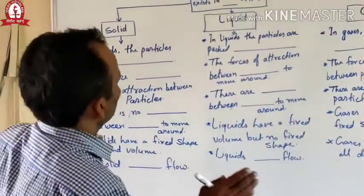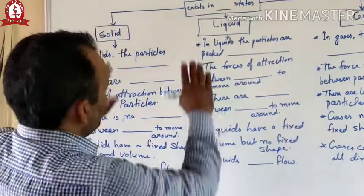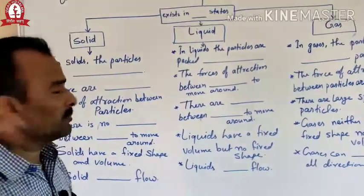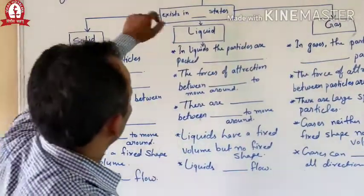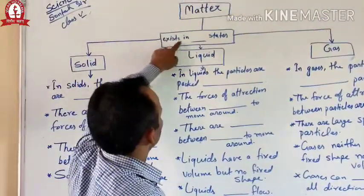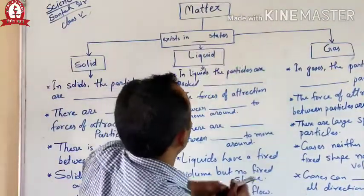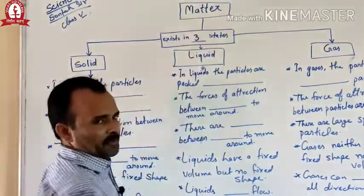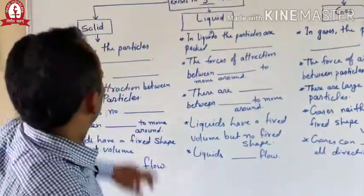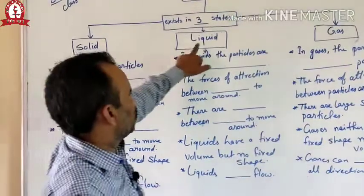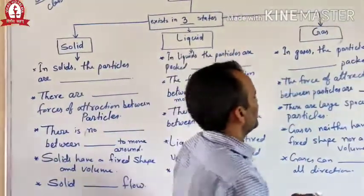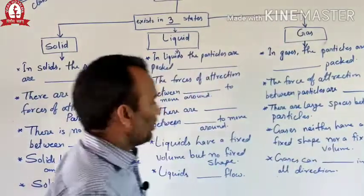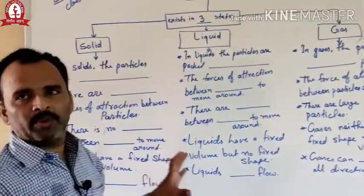We try to understand about matter in a diagram like a flow chart. First of all, matter exists in three states: first solid, then liquid, then gases. After then, we try to learn about each of them one by one.